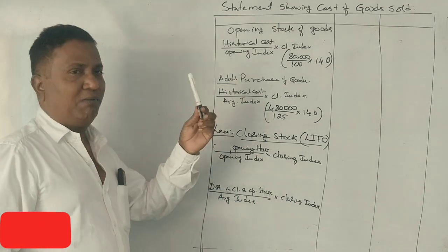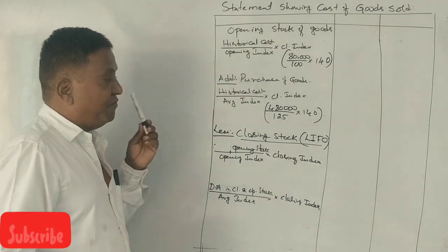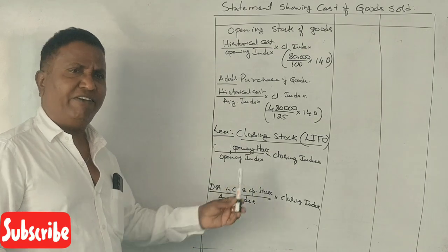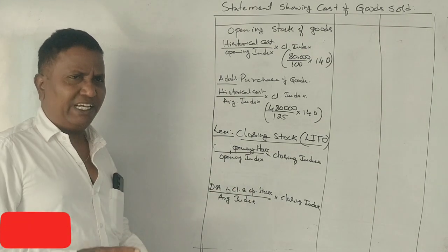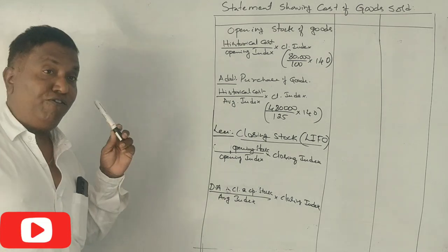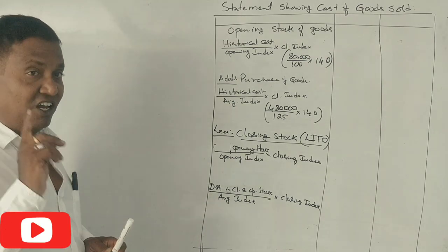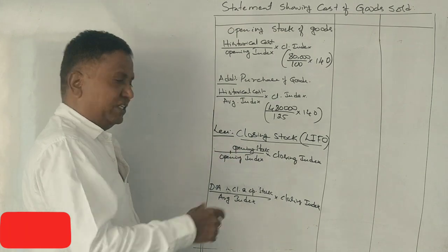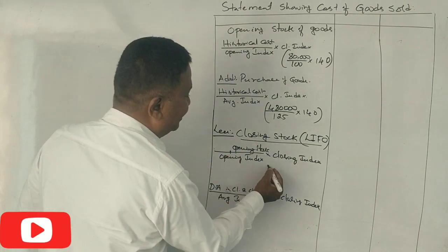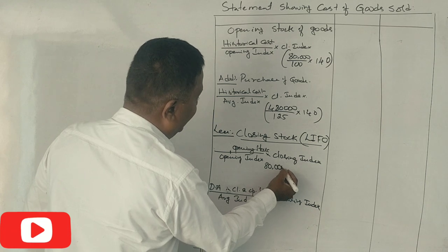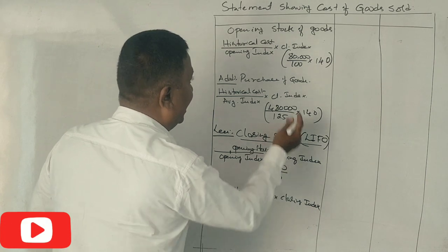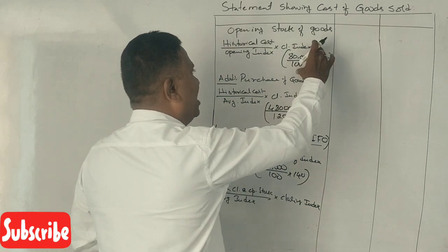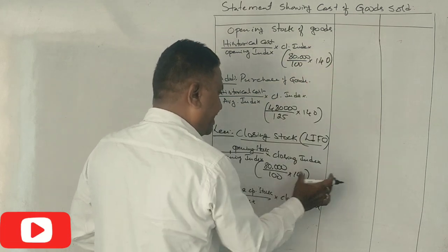For closing stock under LIFO: FIFO closing stock is historical cost divided by average index, multiplied by 140. That gives closing stock of 1,00,000. Under the LIFO system, it is last-in first-out. Opening stock yesterday is 80,000; closing stock yesterday is 1,00,000.